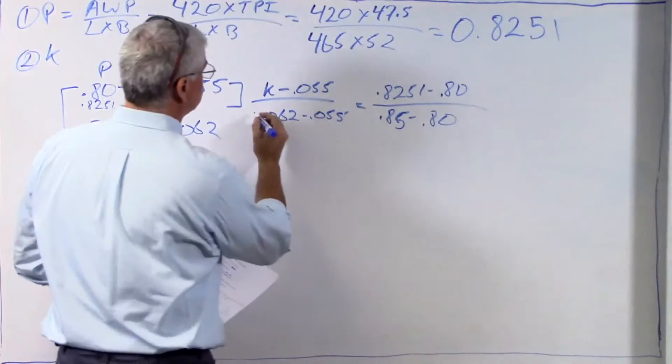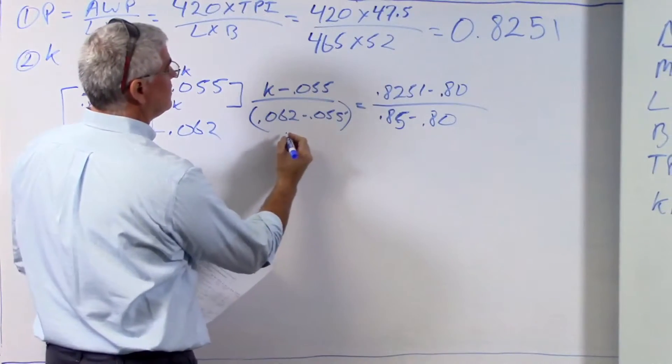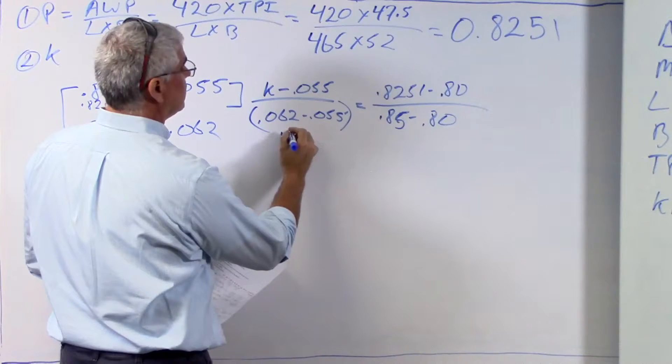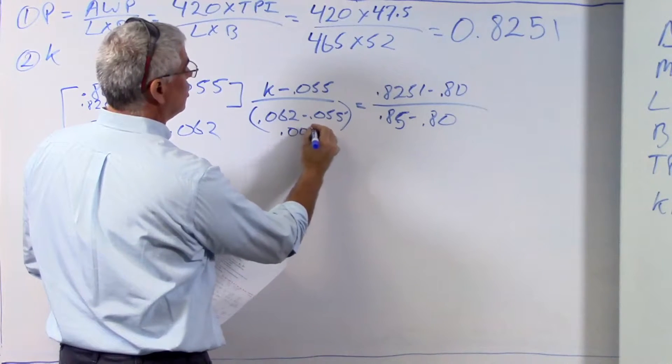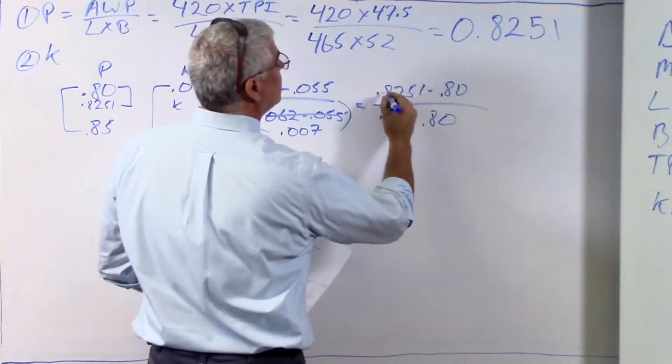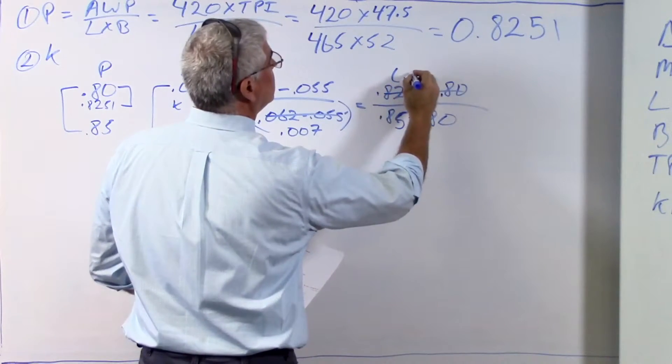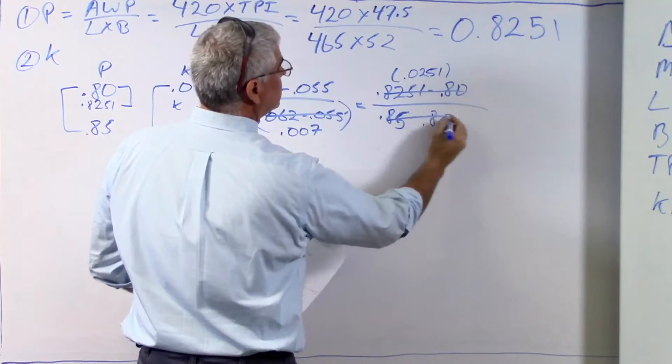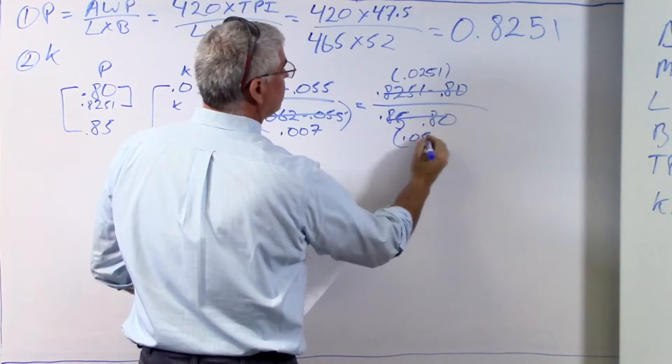I can solve these things. It turns out when I do this that this actually turns out to be 0.007. That turns out to be 0.007. This turns out to be 0.0251, and this turns out to be 0.05.